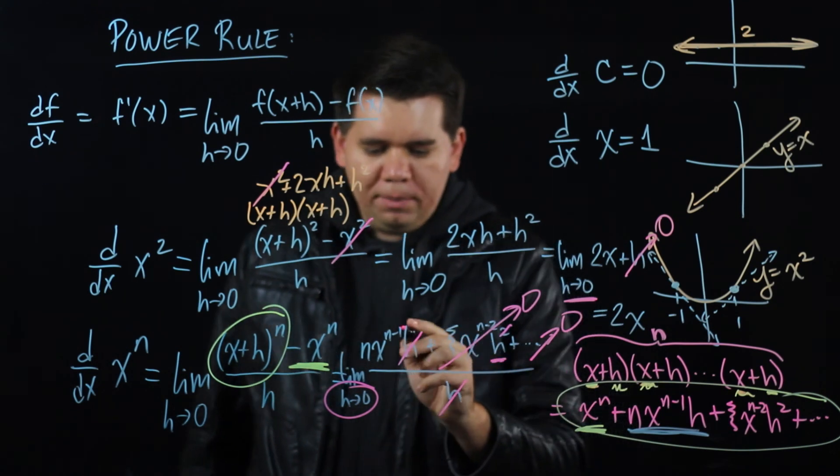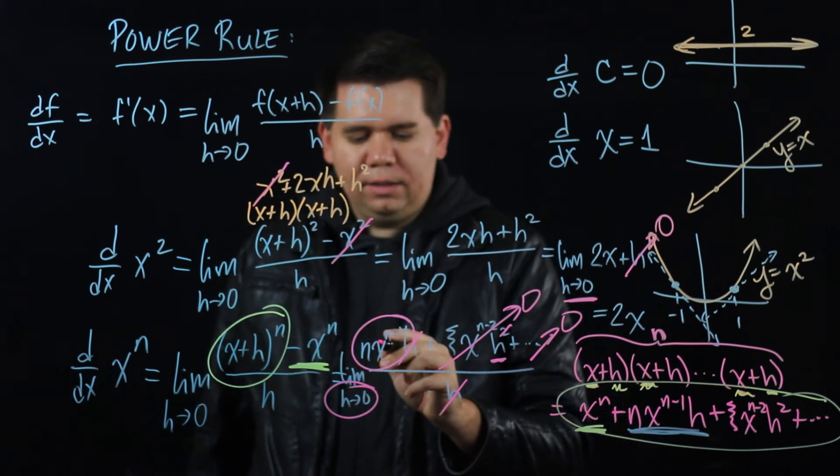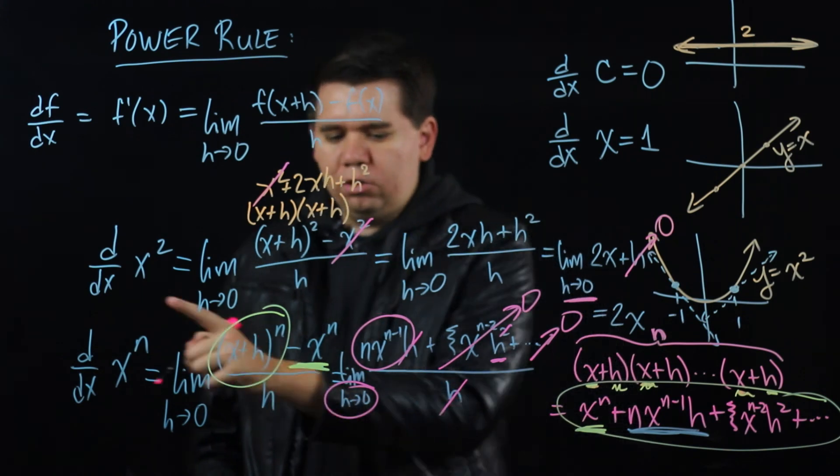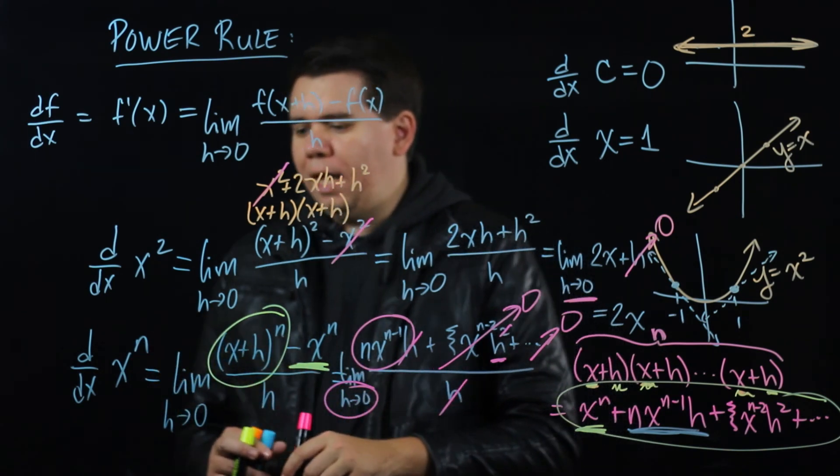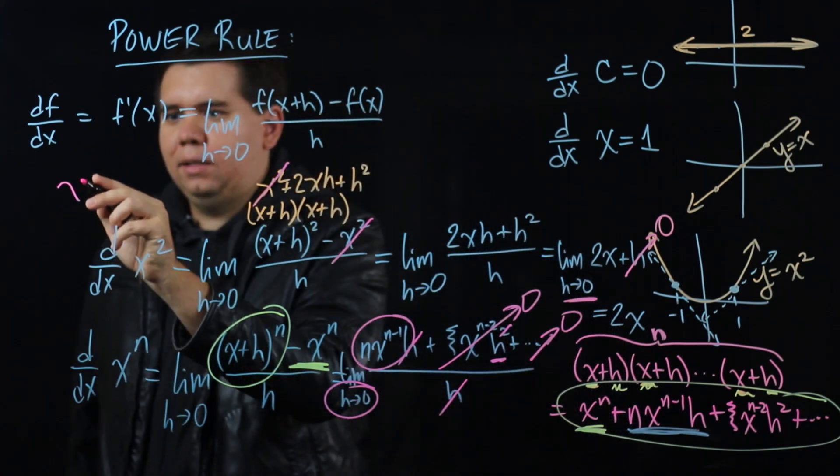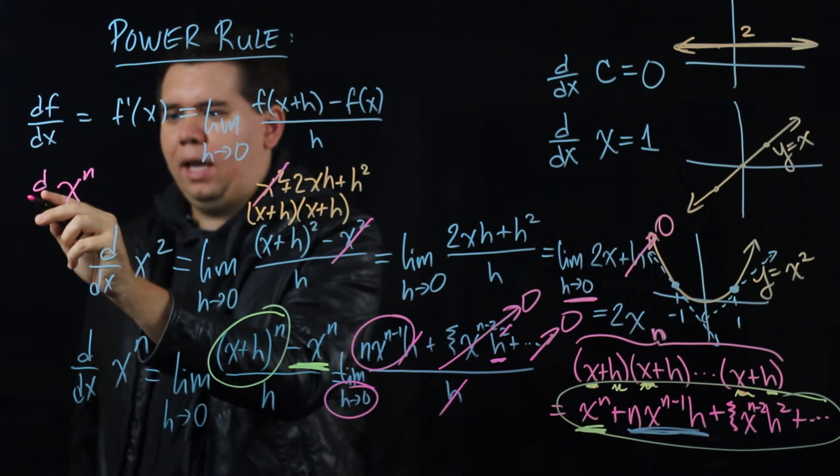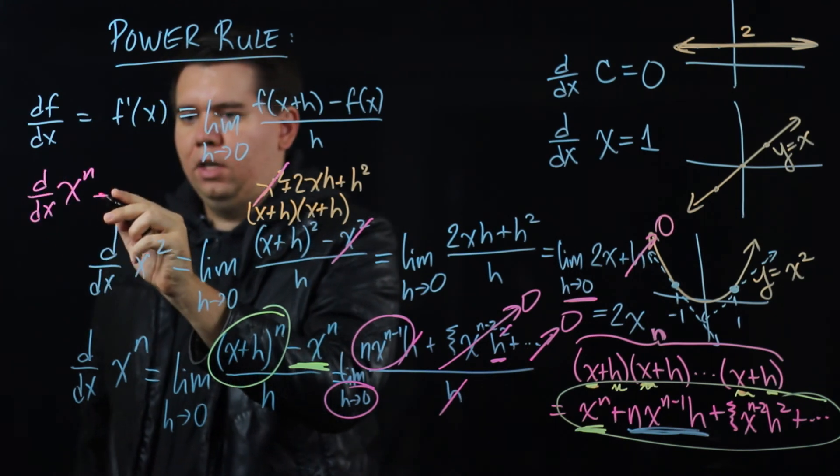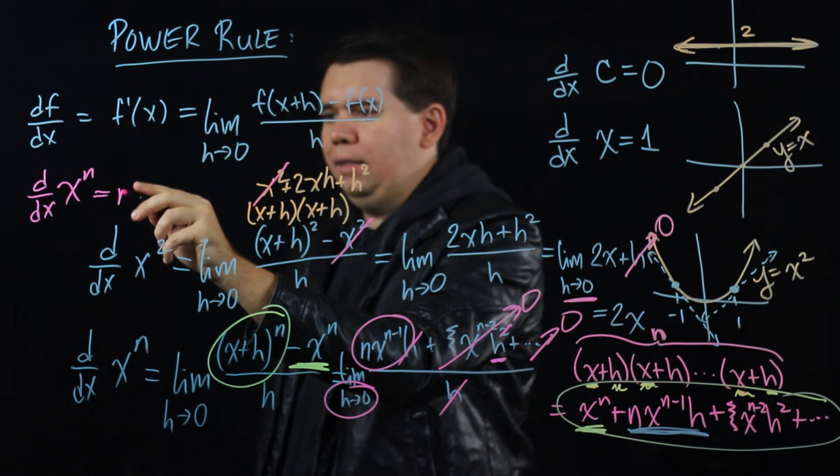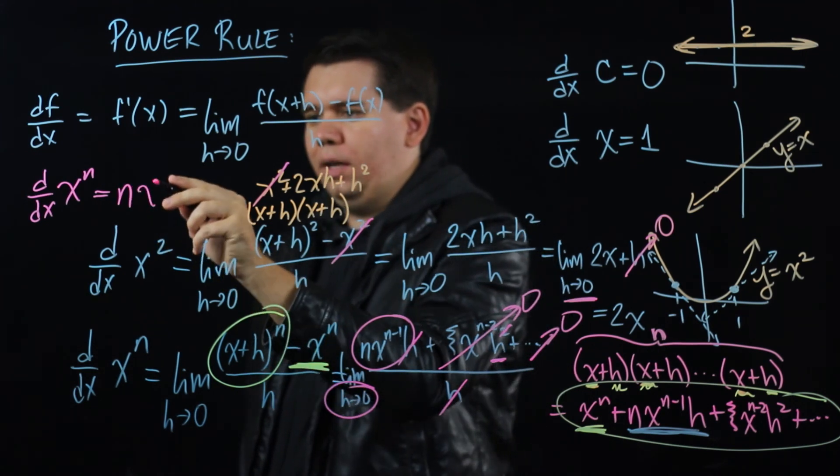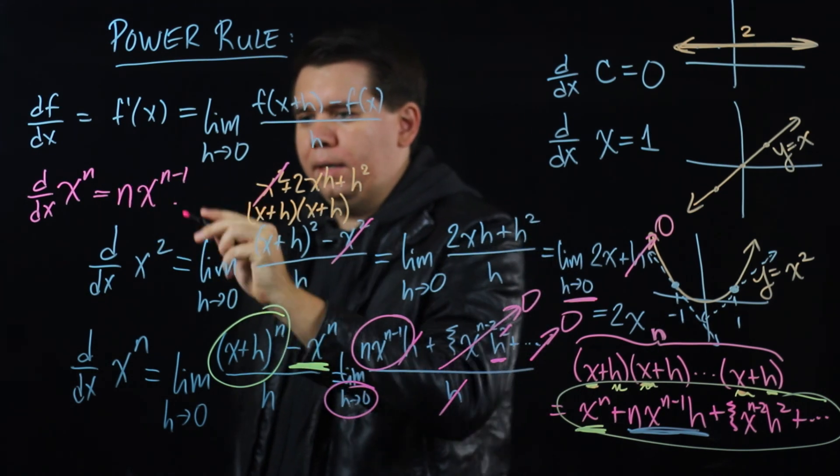And so all I'm left with is n times x to the n minus 1. That is our general rule: whenever you have x to the n and you want to take the derivative of it, you just bring that n down and you're left with x to the n minus 1.